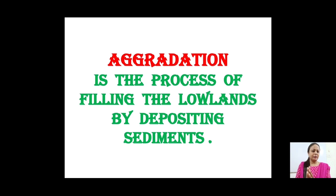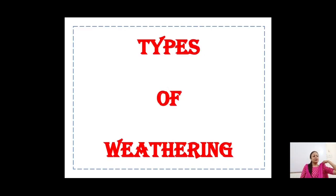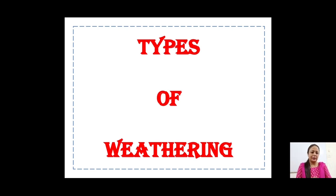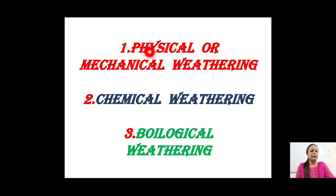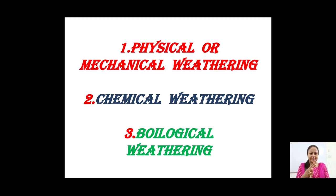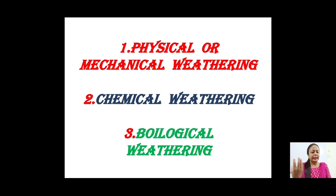We have now understood the concept of weathering. Now we will see the types of weathering — a short introduction here, with more detail in the next module. The three types are: physical or mechanical weathering, chemical weathering, and biological weathering. Physical or mechanical weathering involves the agents wind, water, waves, and ice, whose physical force leads to the breaking of rock.